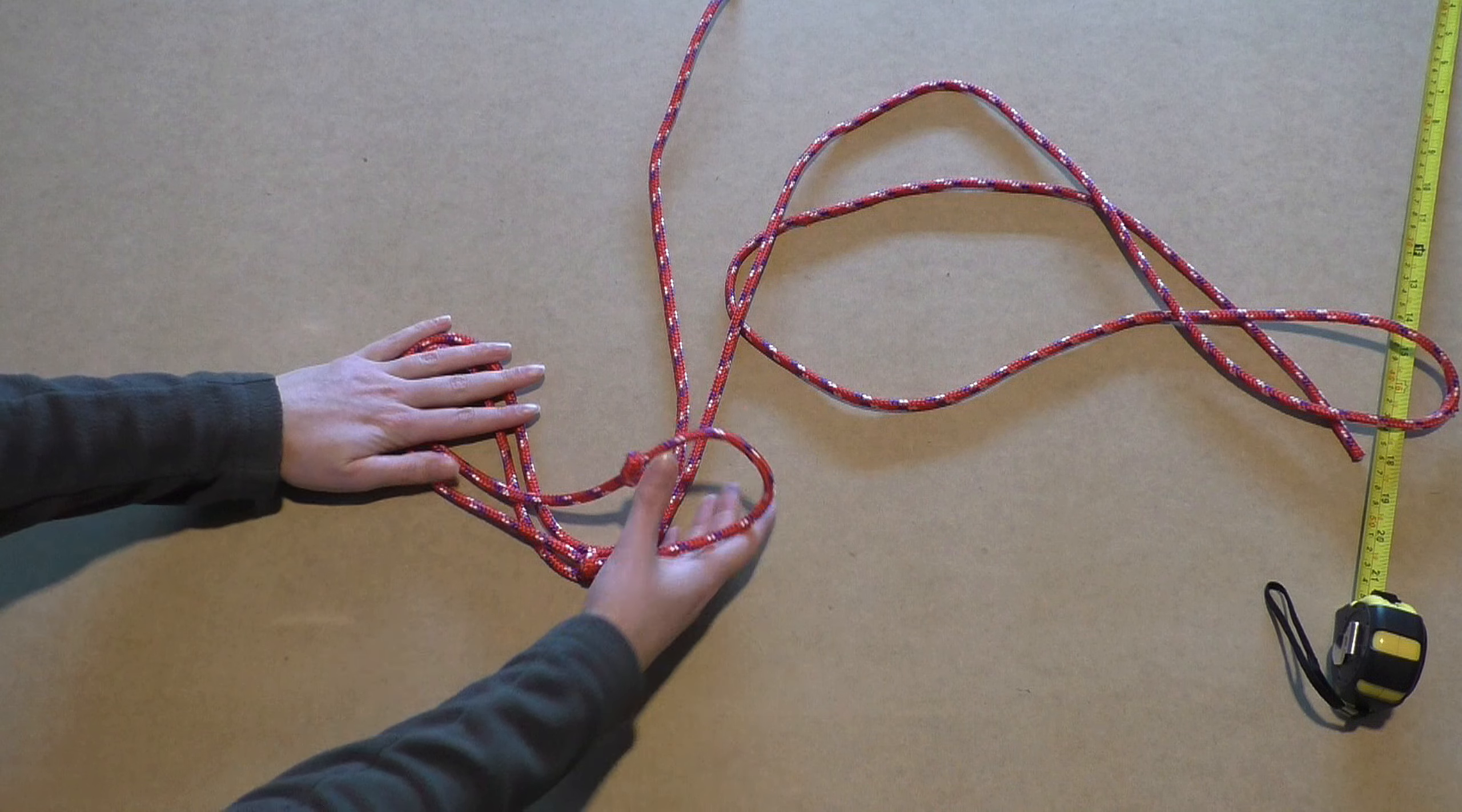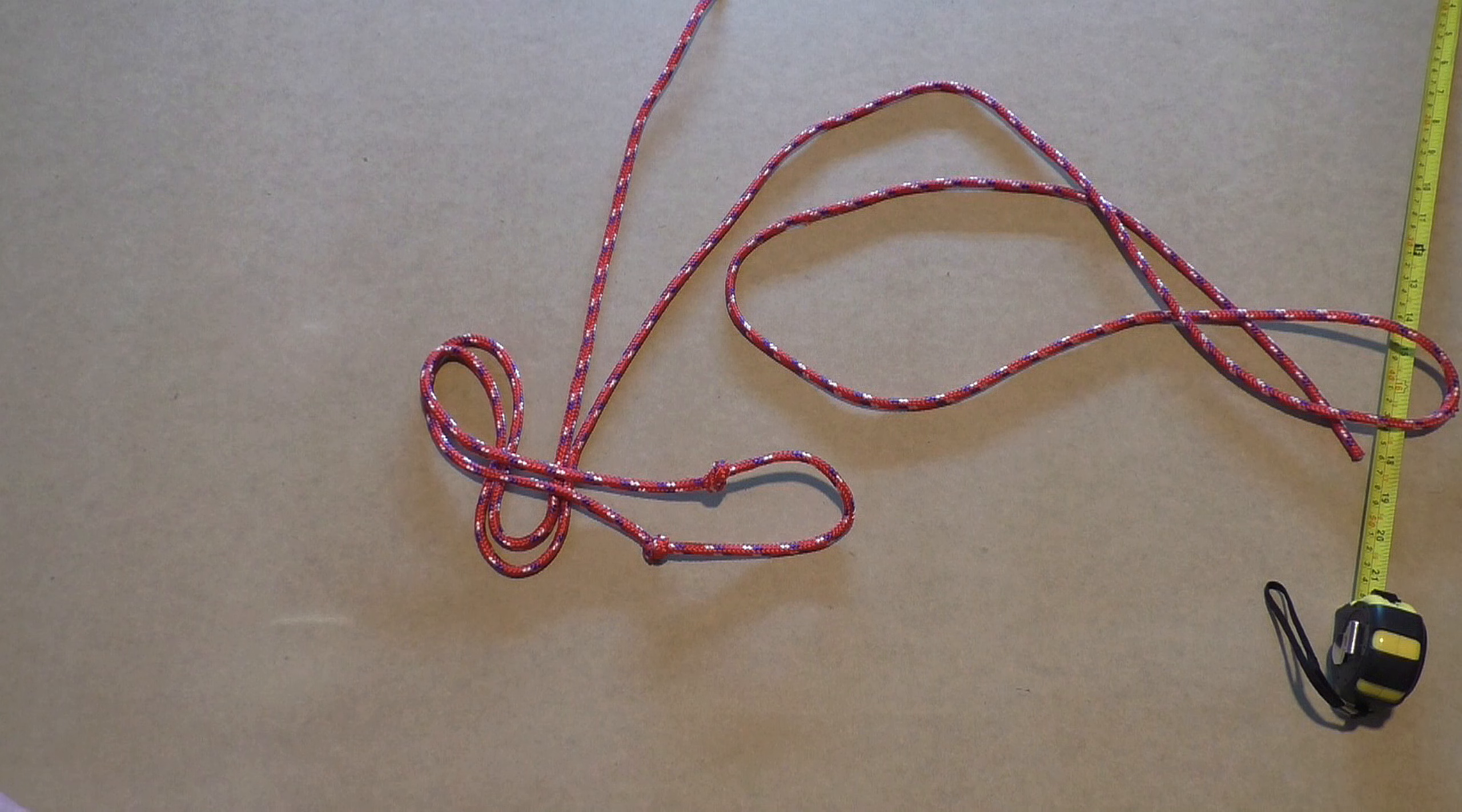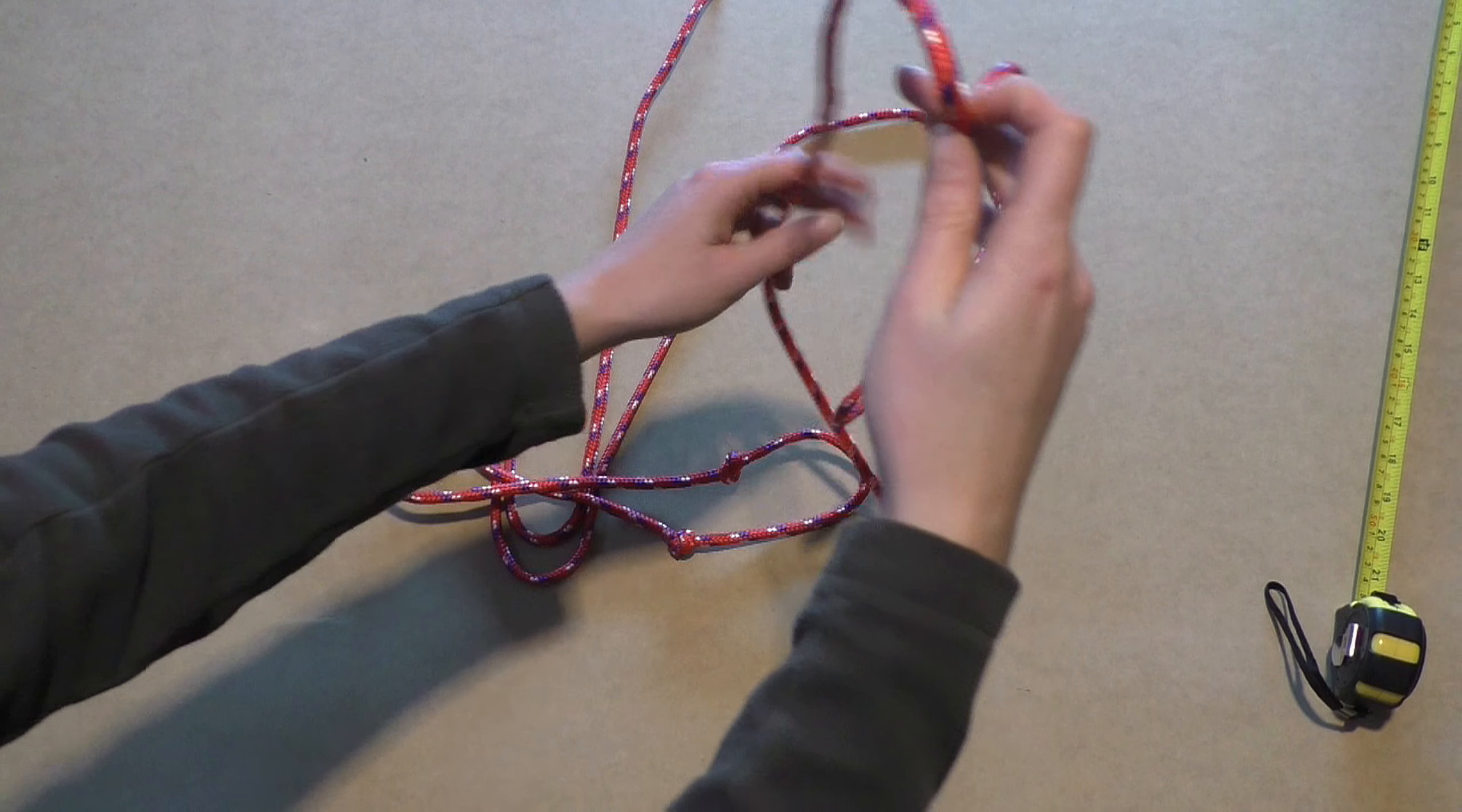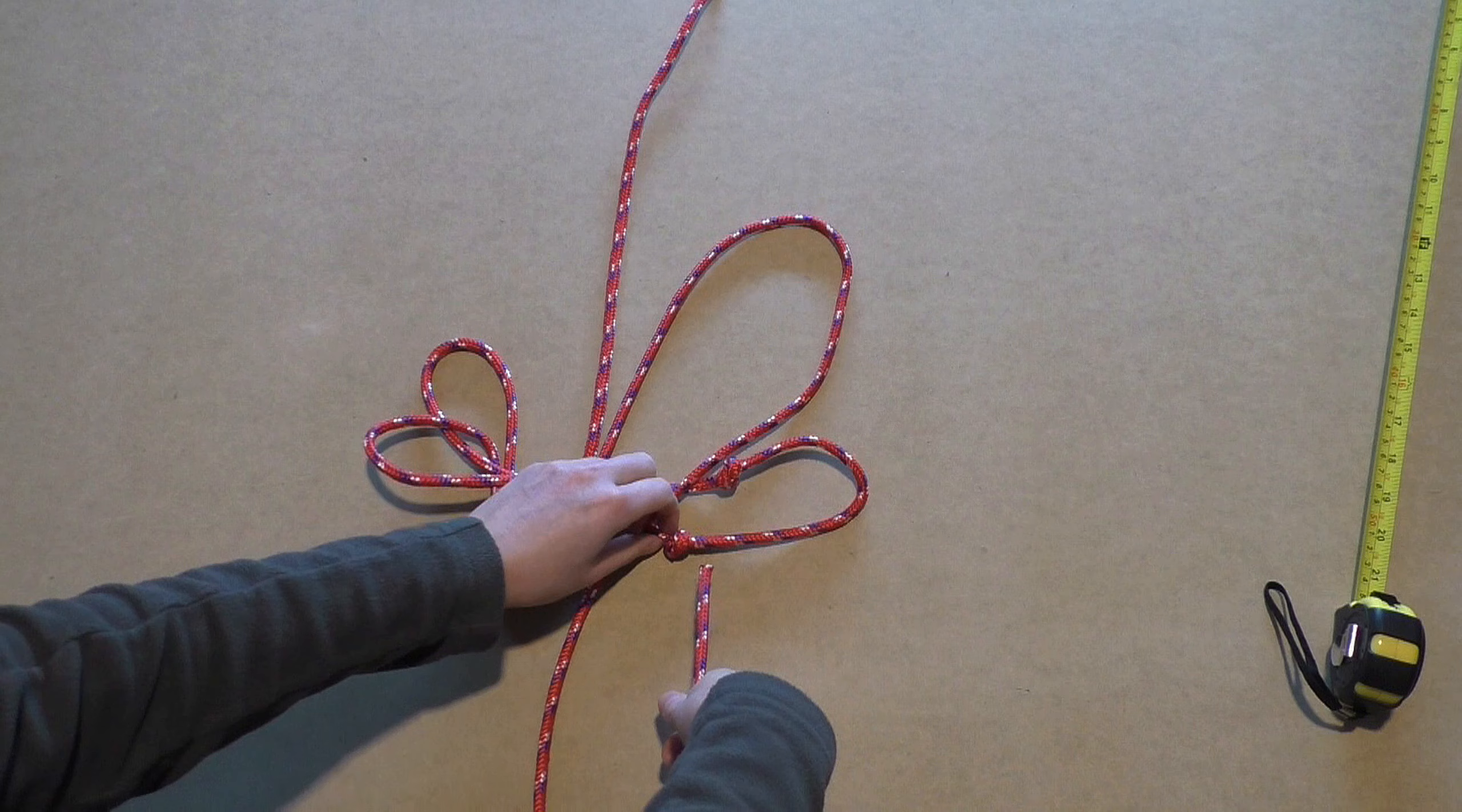Take the knot end and lay it over the S-turn to the right. Take the inner loop and lay it over the outer loop like this. Take the shorter end of the rope and lay it downwards over the knot end. Take it back up by leading it underneath the lower rope and over the upper rope.